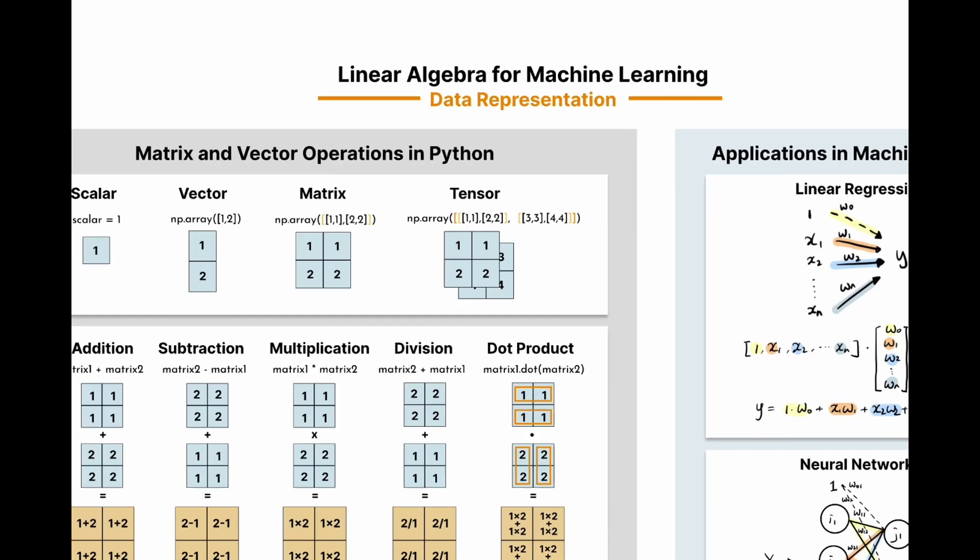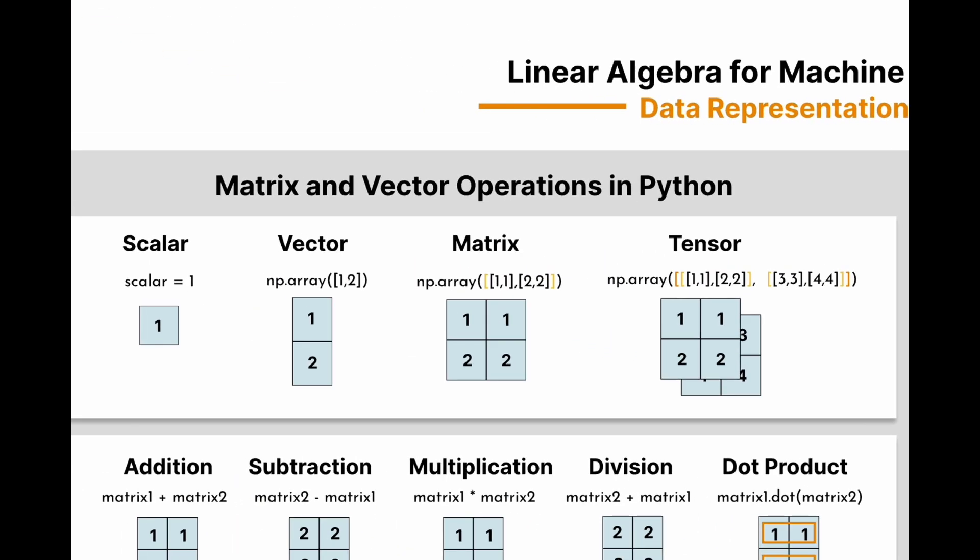First, let's define the building blocks of linear algebra: scalar, vector, matrix, and tensor. Scalar is a single number. Vector is a one-dimensional array of numbers. To create a vector, we use numpy array and pass a list as the vector elements. Matrix is a two-dimensional array of numbers, and we use nested lists to create a matrix. Tensor is multidimensional, which can be created by layering multiple nested lists together. This video will primarily focus on vectors and matrices.